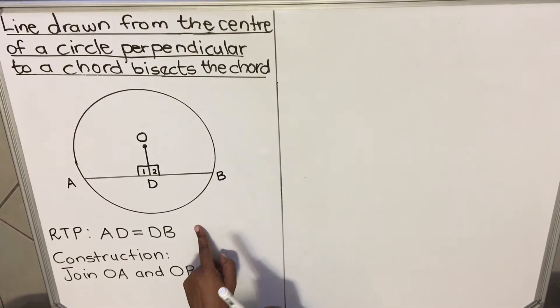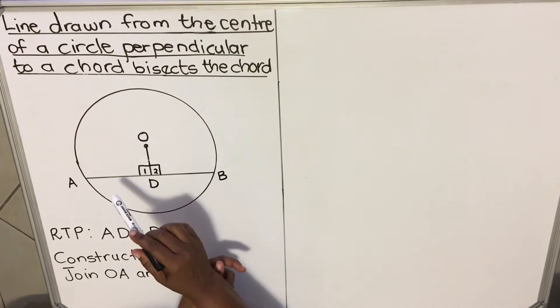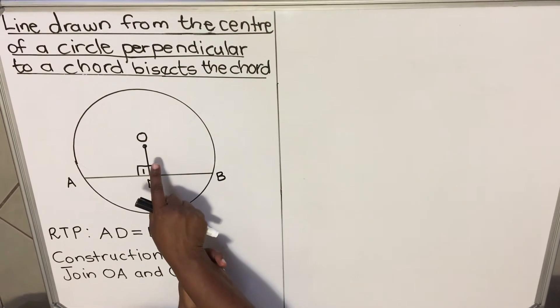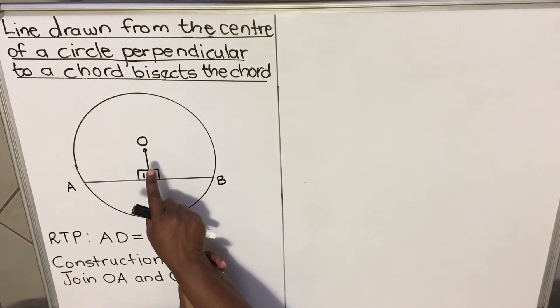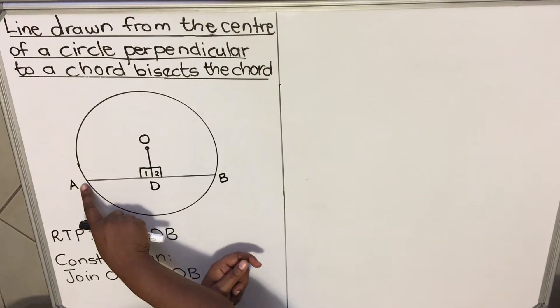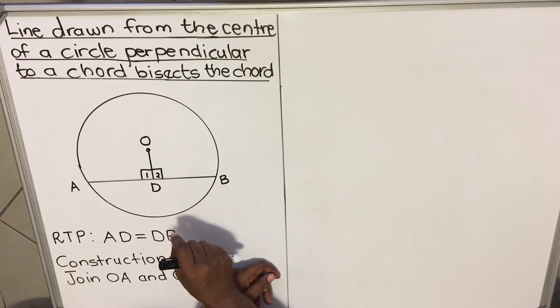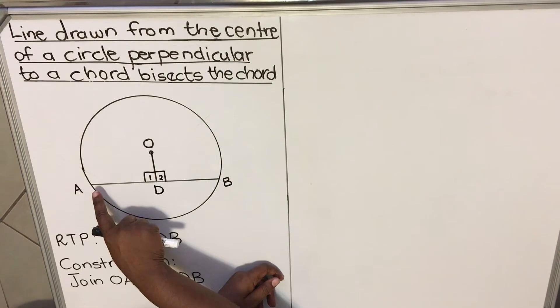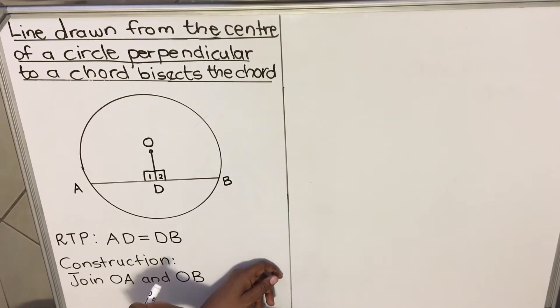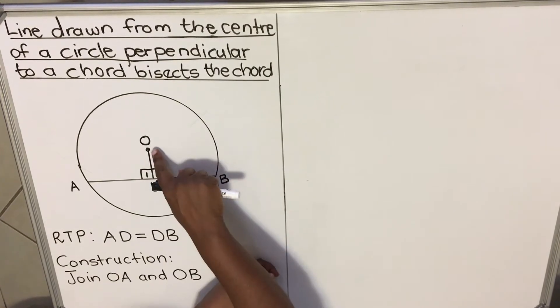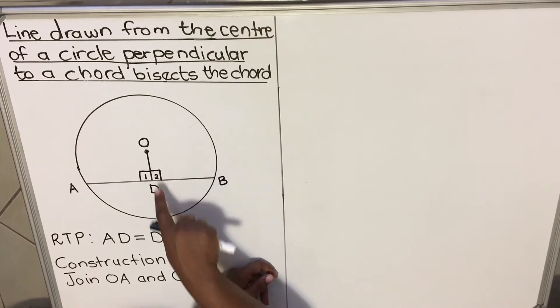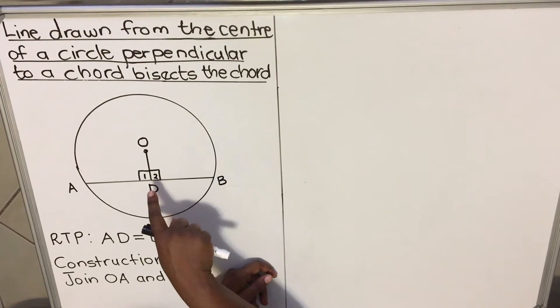It says the line drawn from the center. So it means you have a circle because you can only have a center if you have a circle. We have a circle, we have a center. And then the line is drawn from the center of a circle perpendicular to the chord. So you'll have a chord. Our chord is AB. A chord is the line that goes from one side of the circumference to the other side of the circumference, but it doesn't go through the center. Now that line is drawn perpendicular from the center perpendicular to the chord. So that line is OD. It needs to be perpendicular to the chord.